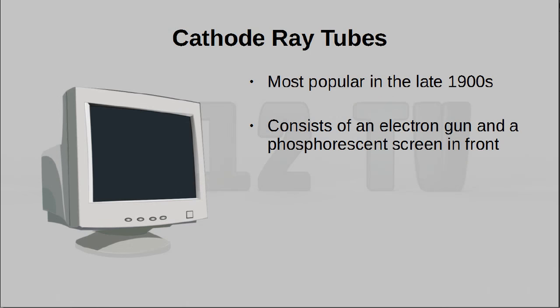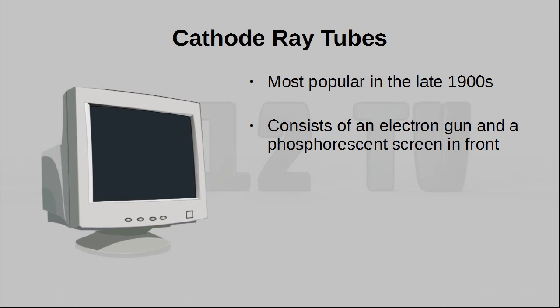First and foremost, we have cathode ray tubes, CRTs — those very huge monitors with that tube at the back. CRTs are made up of two key components: one or more electron guns at the back, as well as a phosphorescent screen in front.